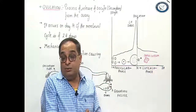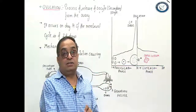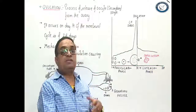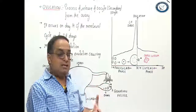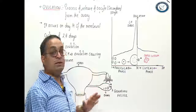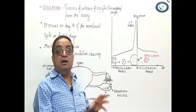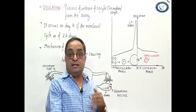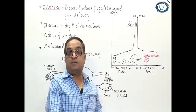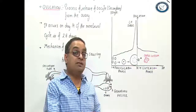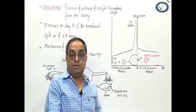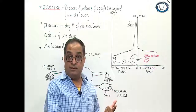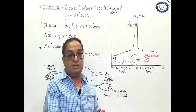If this secondary oocyte gets fertilized by a sperm — if sexual intercourse has happened and a sperm penetrates into the secondary oocyte — then meiosis is completed and ovum is formed. It is at this stage that the second polar body is released.